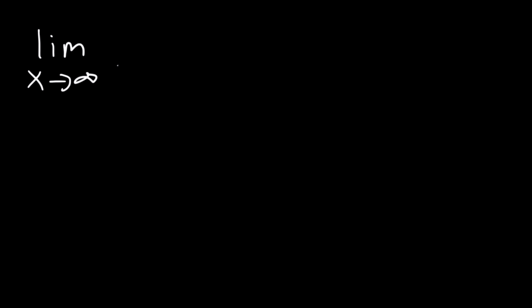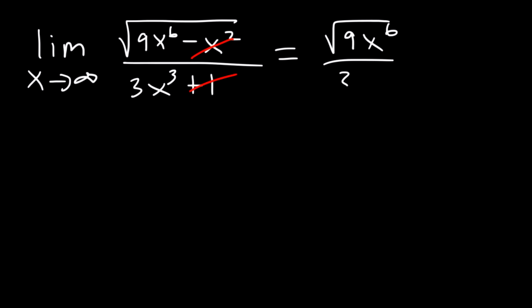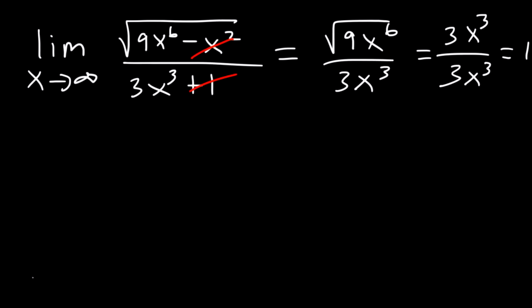Now let's try this one. What is the limit as x approaches infinity of the square root of 9x to the 6 minus x squared divided by 3x cubed plus 1? The insignificant terms drop out, so this becomes the square root of 9x to the 6 over 3x cubed. The square root of 9 is 3, and the square root of x to the 6 is x cubed. So these two cancel and the final answer is 1.